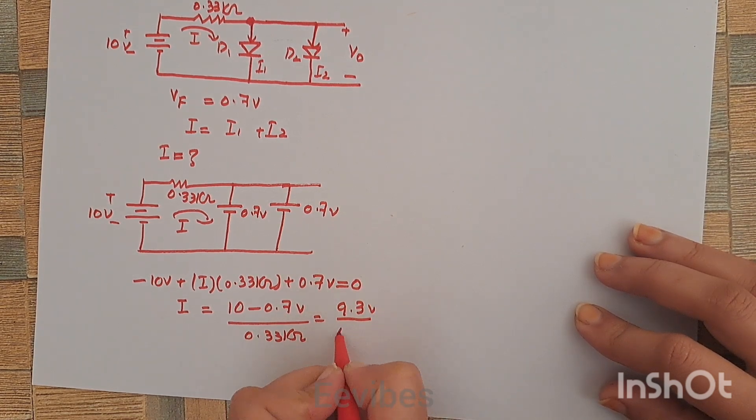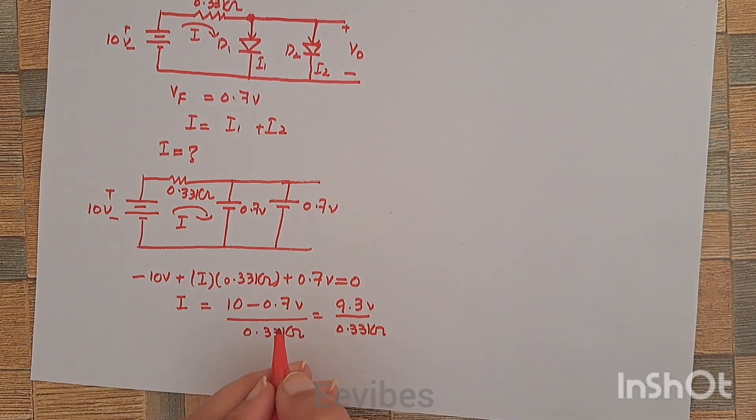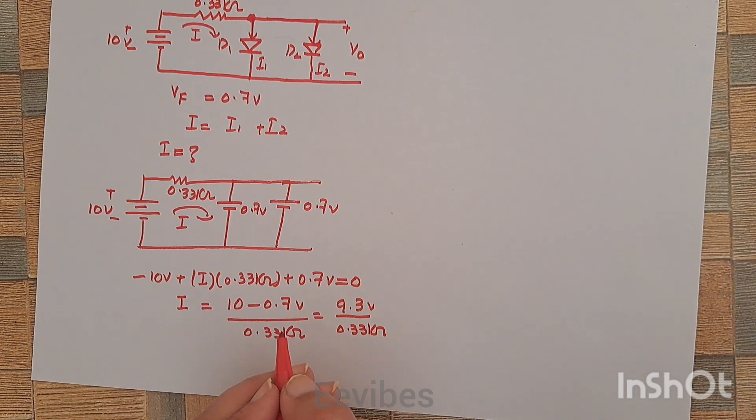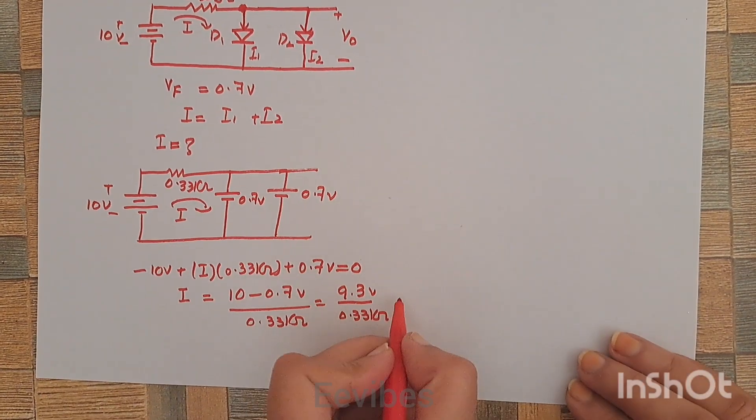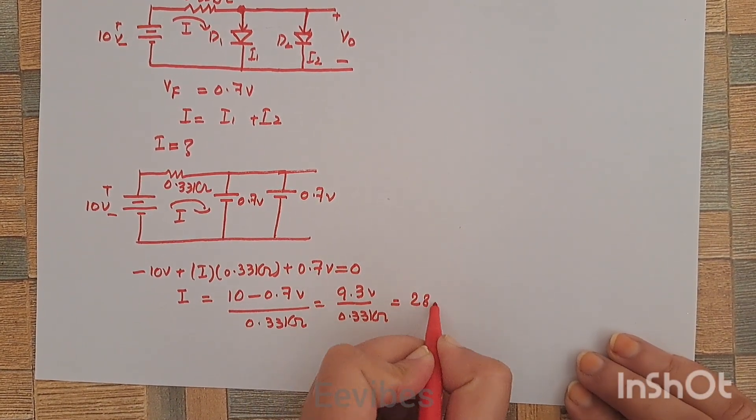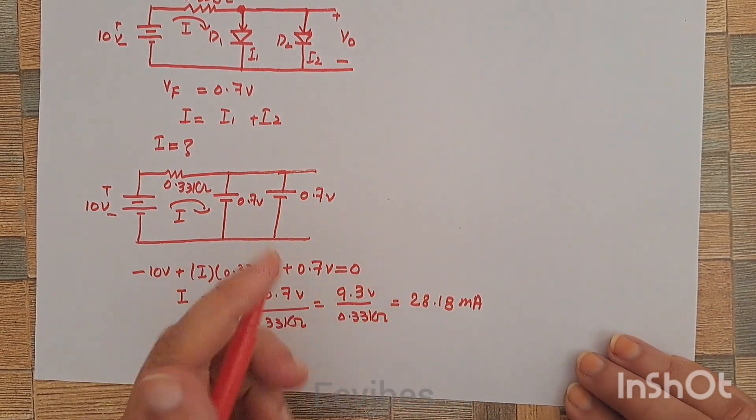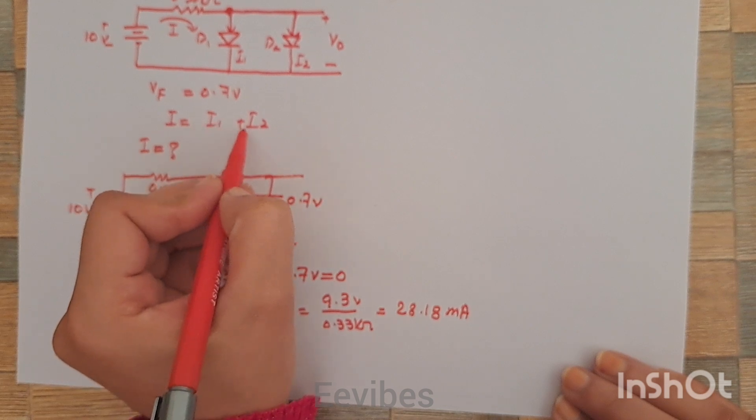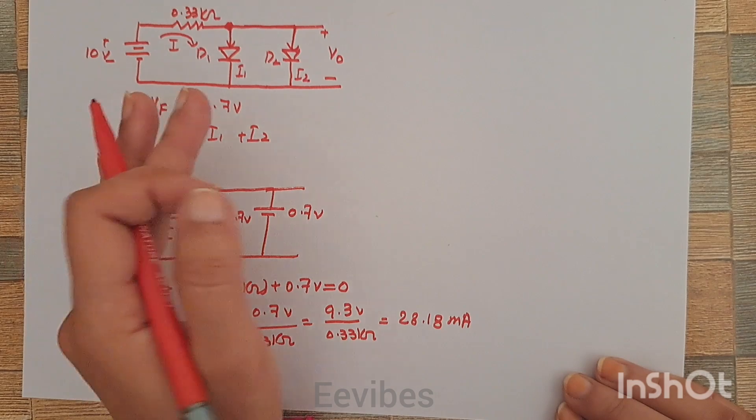Let's just simplify it: 9.3 divided by 0.33. You will get the value of the current equal to 28.18 milliamperes. As we mentioned earlier, I is equal to the summation of I1 and I2.